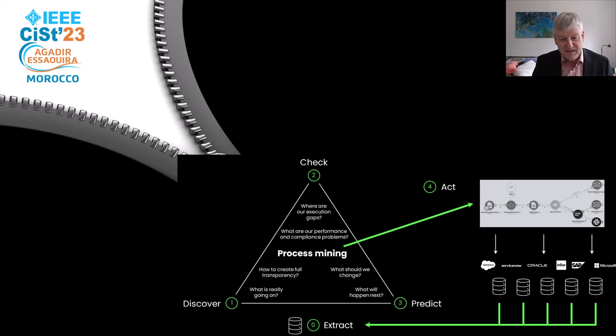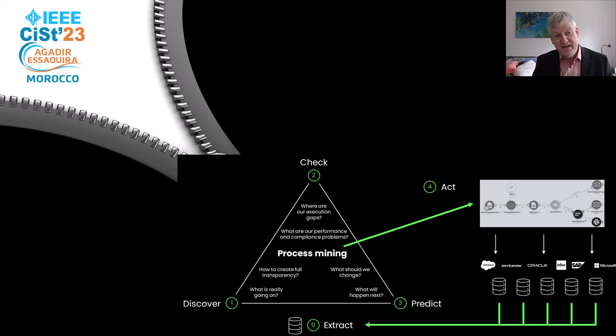Step one is that you discover the actual processes, which creates transparency — you can see what is really going on. This is often very surprising and provides many opportunities for people to immediately see things in the processes they did not know about before. However, after the first shock of seeing what your processes look like, you start looking at models that are more normative. You adapt your discovered process models so they describe not what is really happening, but what you would like to happen. Then, using conformance checking techniques, you can see where reality is deviating from the models.